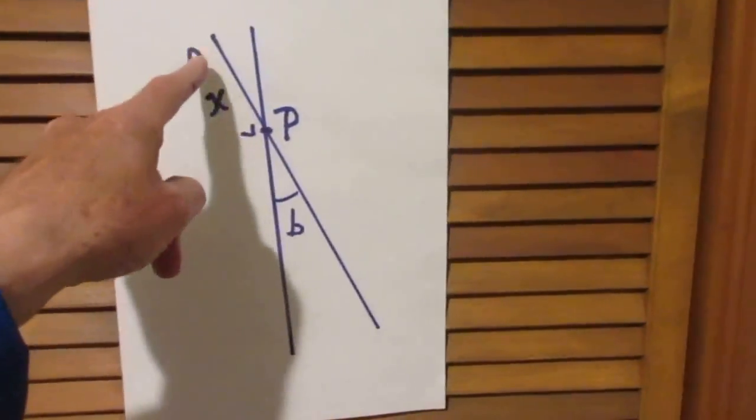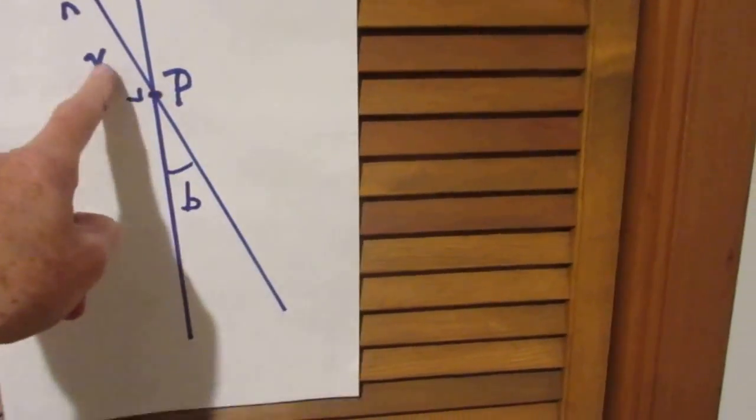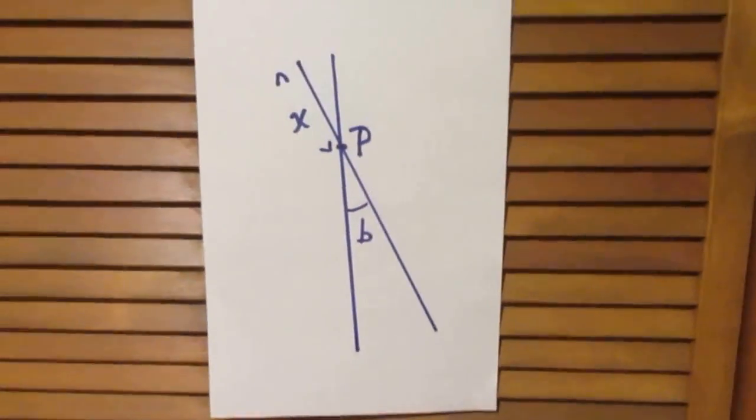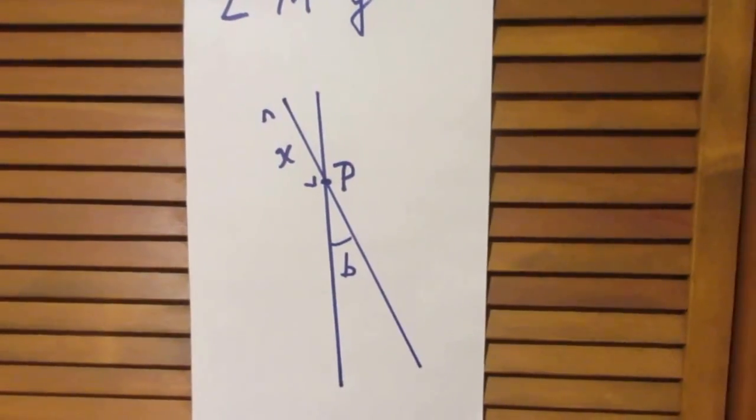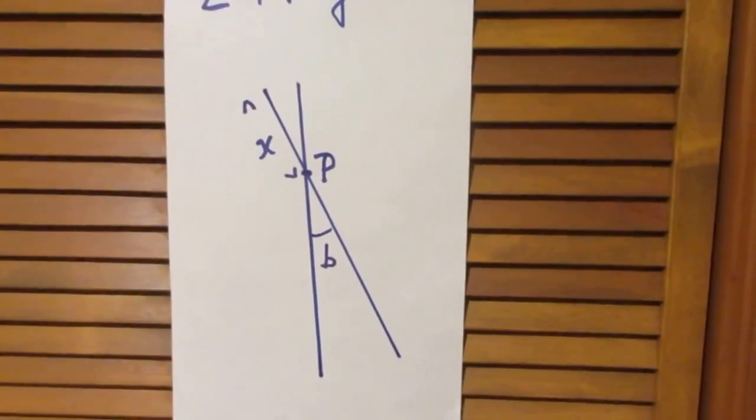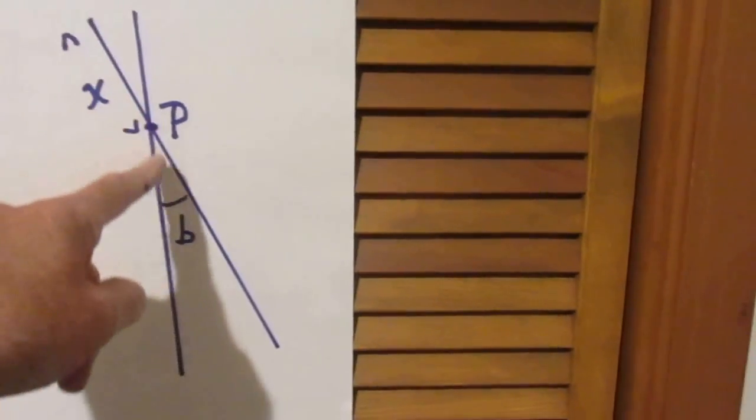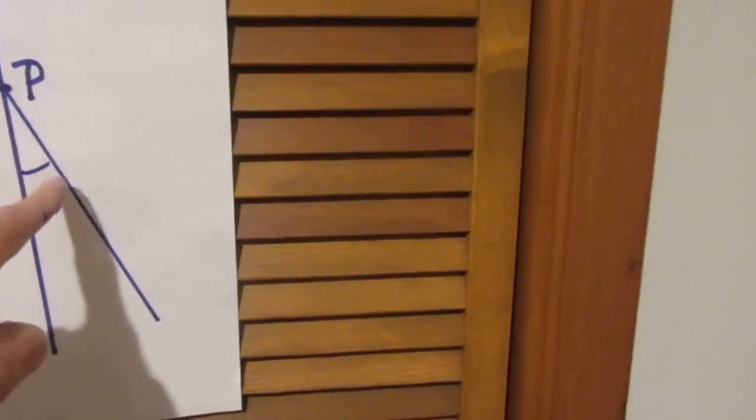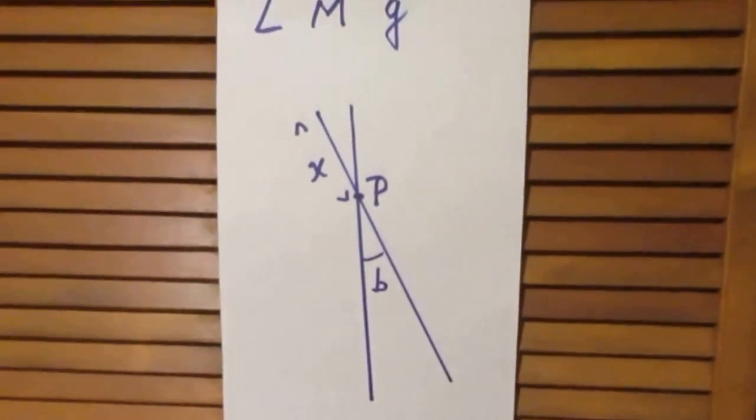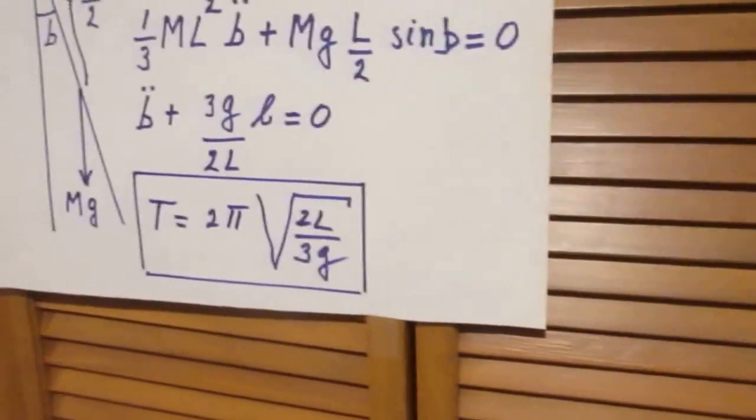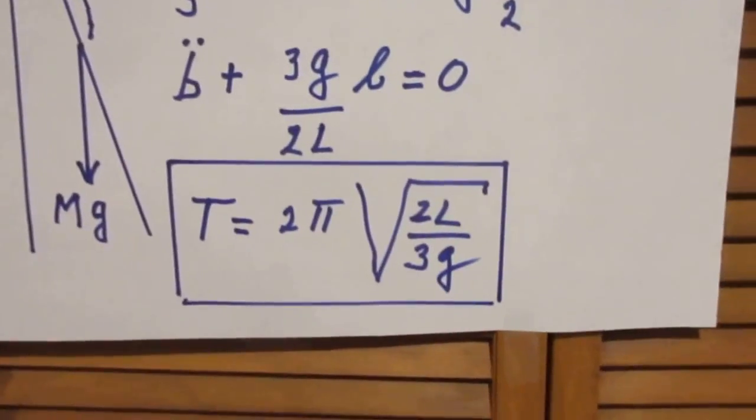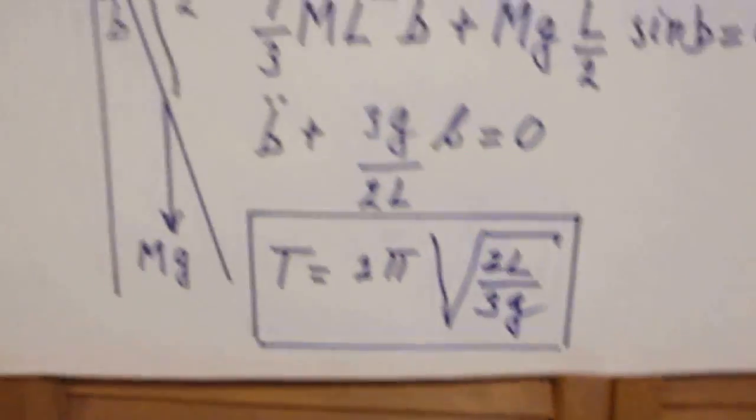I call the distance from the end to point P, I call that x. And the question now that I have for you: are there any points x between the center of mass and the end for which the period of oscillation is exactly the same as it was when I oscillated about point P?